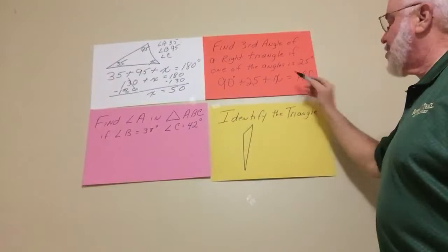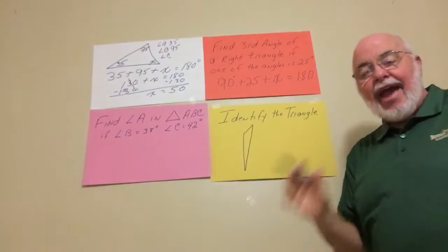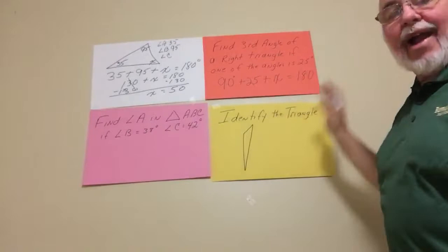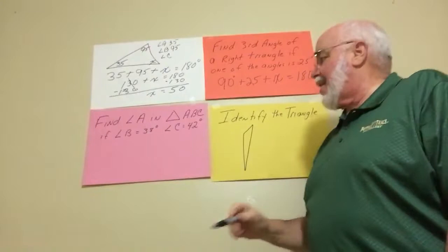Now if you want to do 180 minus 90 is 90, 90 minus 25 is 65. Any way you want to do it, if you want to put these together, do 115 and then subtract from both sides, the main thing here is you want to remember that the three angles have to add up to 180.